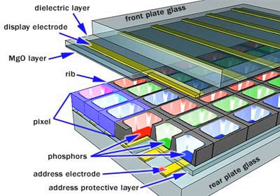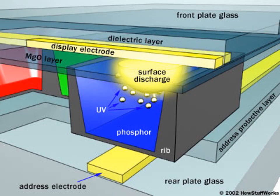The address electrodes sit behind the cells along the rear glass plate, while the transparent display electrodes, which are surrounded by an insulating dielectric material, are mounted above the cell along the front glass plate. Both these sets of electrodes extend across the entire screen. The display electrode is covered by a magnesium oxide protective layer that enables high luminous efficiency.